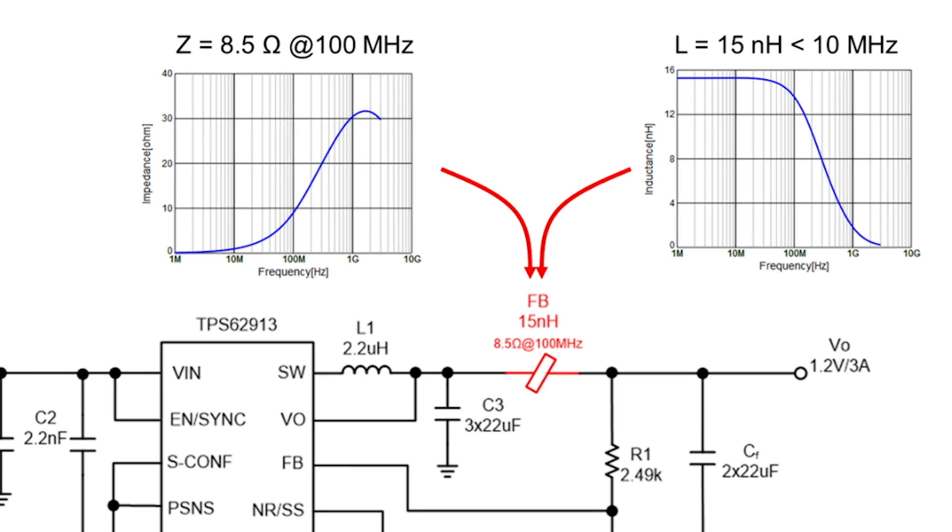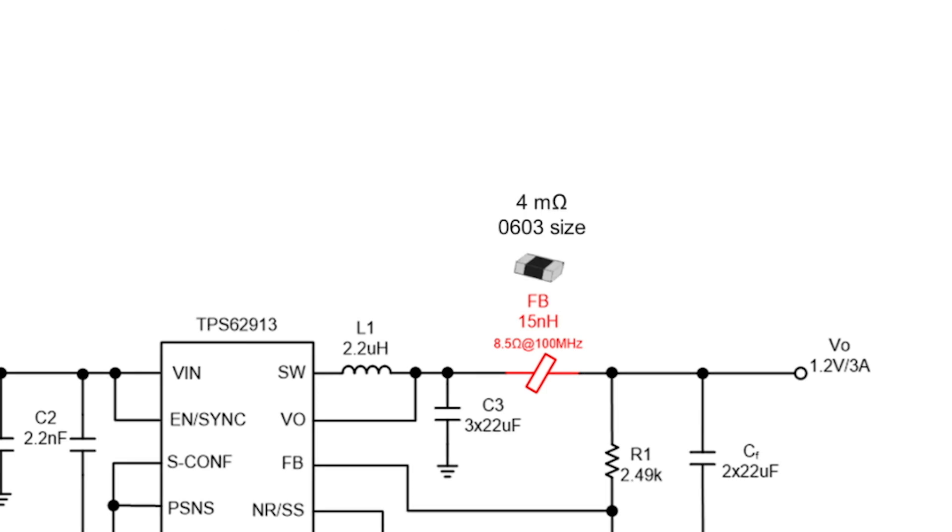On top of that the ferrite bead comes in a very small package with just 4 mOhm series resistance minimizing any power losses. Now let me show you the output voltage ripple of the buck converter.